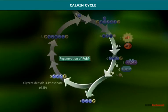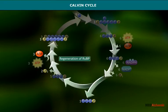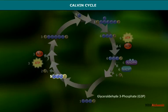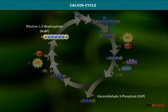In the third step, ribulose-1,5-bisphosphate is regenerated. For every six turns of the cycle, five molecules of glyceraldehyde-3-phosphate are used to reform three molecules of ribulose-1,5-bisphosphate.